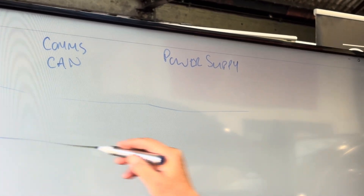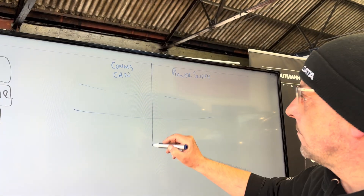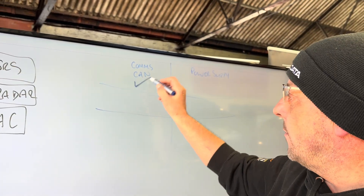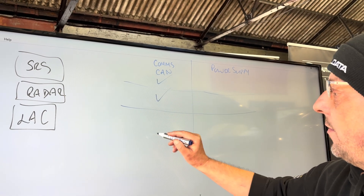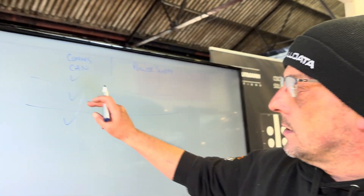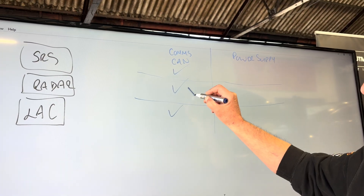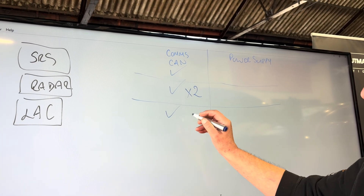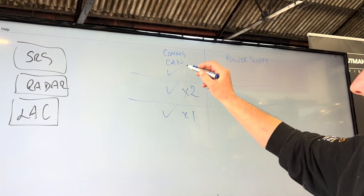We can communicate with the SRS, we can communicate with the radar, and we can communicate with the lane assist camera. We've verified the CAN networks on all three modules. I haven't shown the airbag module testing on video - I don't really want to show airbag module testing in case somebody hurts themselves testing airbags. But we've checked the communication lines on all three modules. The radar has two separate networks, the lane assist camera has one, and the SRS has one.